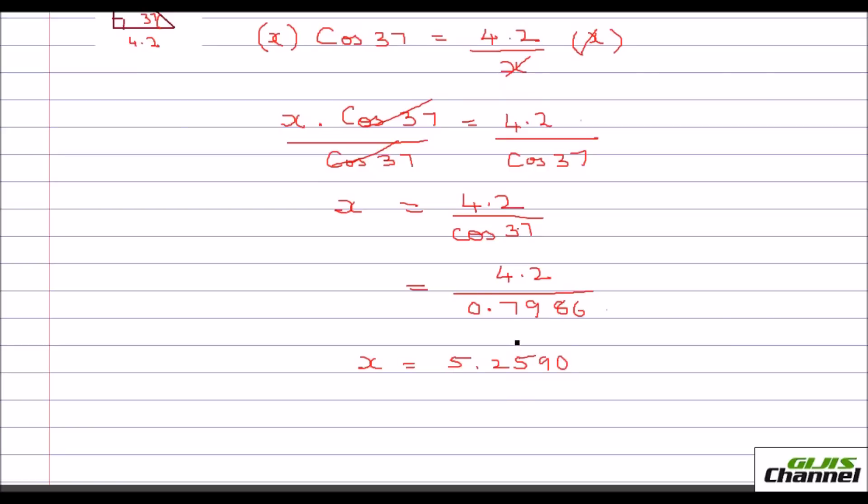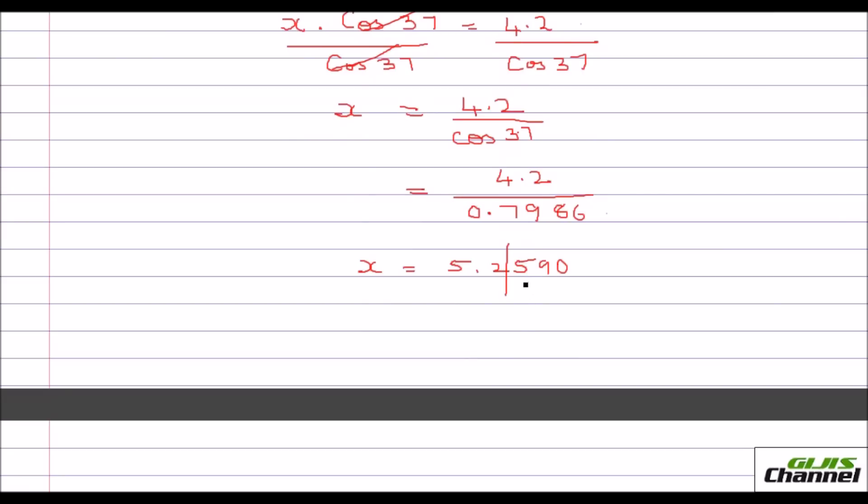And I told you, since it is the side, you just need one digit after the decimal point. Since this is 5, when you have 5 or more as the next digit, you have to add one to the previous one. So our x is 5.3.